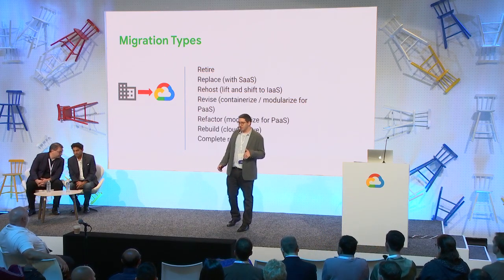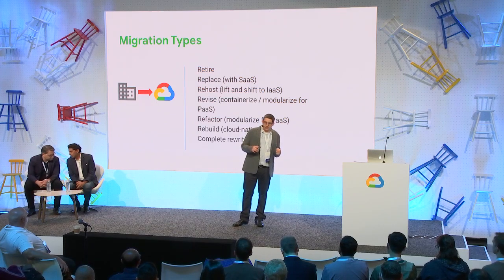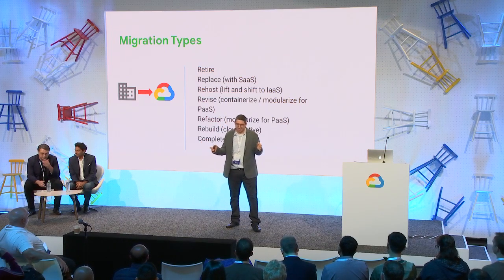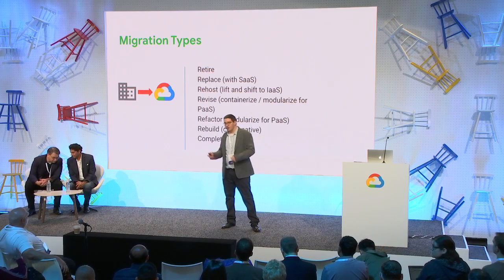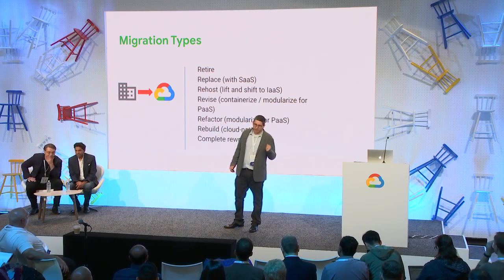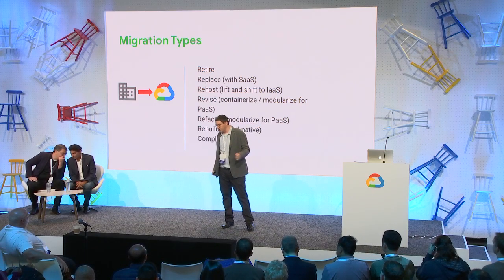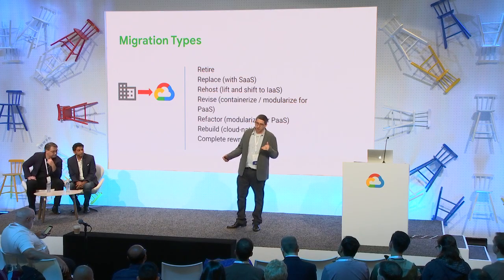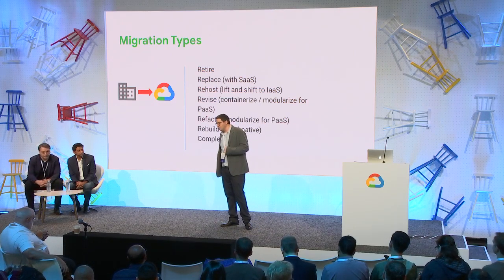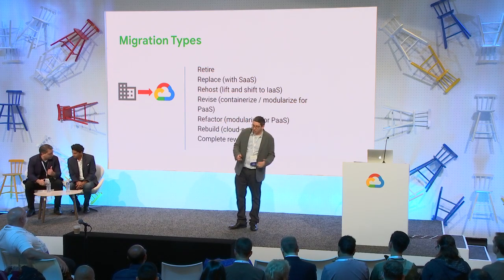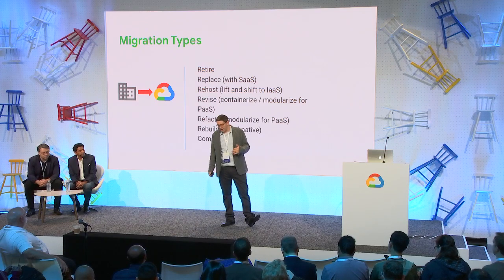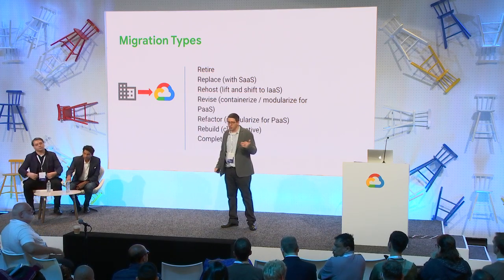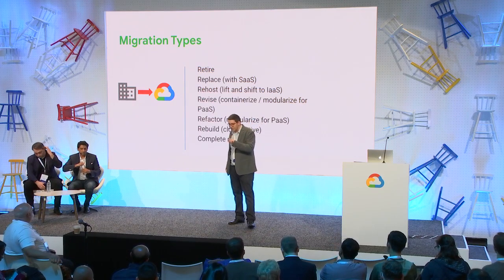When we actually need to move an application, we have a lot of options. The least disruptive option, but also usually the least useful, is just to re-host it — take our servers as is and migrate them into the cloud. About six months ago, Google acquired Velostrata, a company that does VM migration, and there are other Google partners that do that as well. Then we start getting into the realm of actually changing something in the application when moving to the cloud, which is usually more disruptive but also more useful.